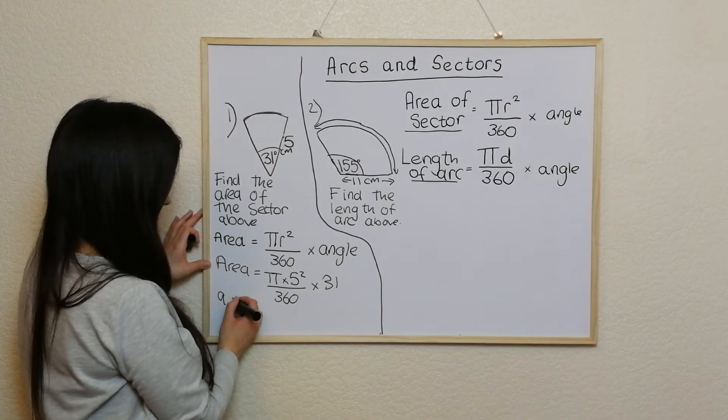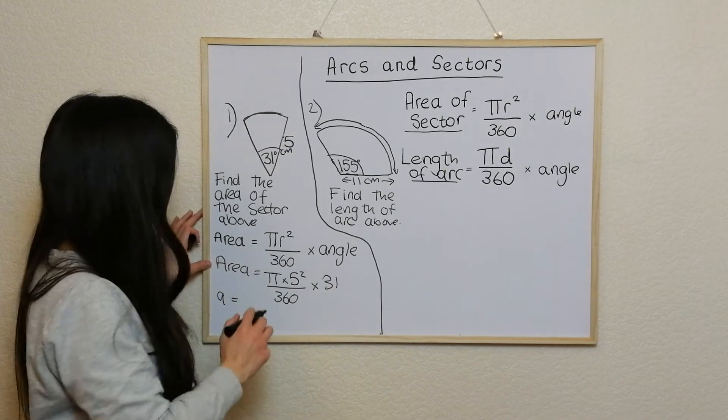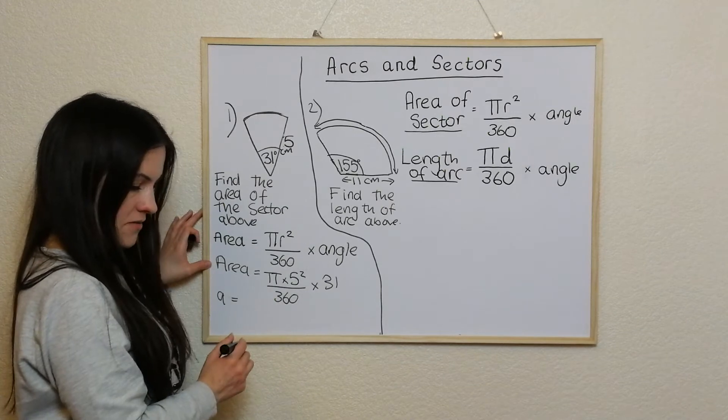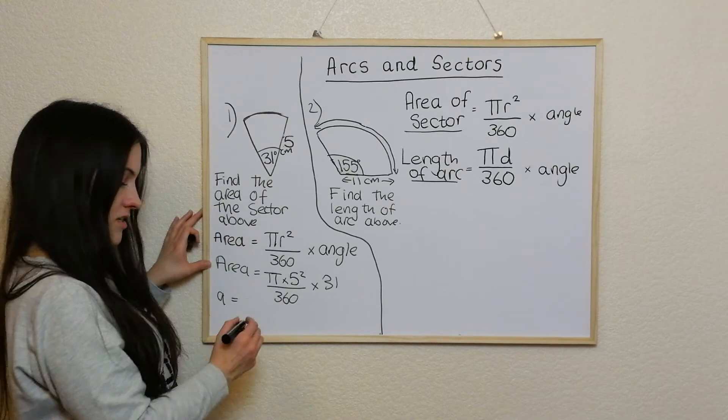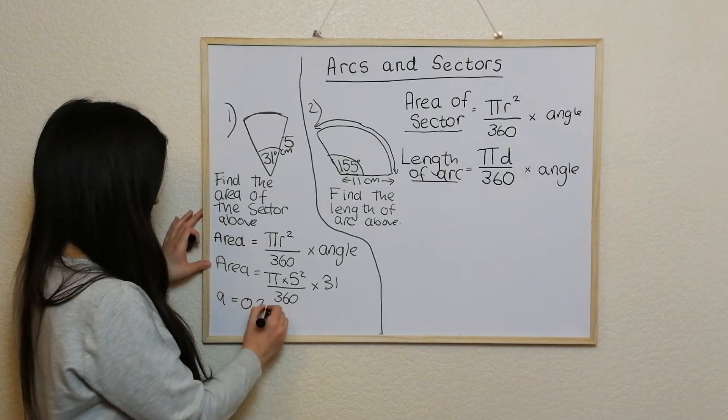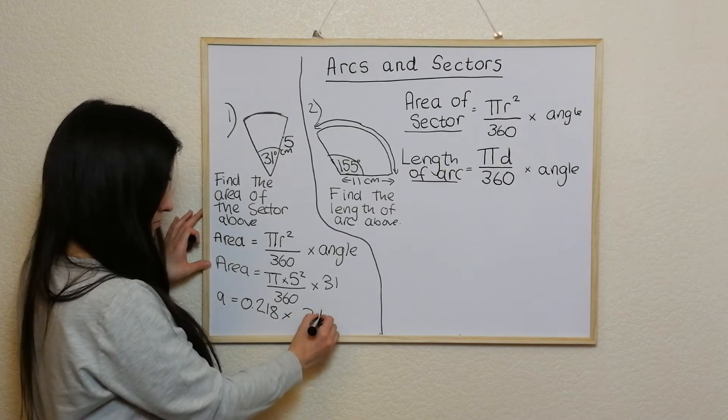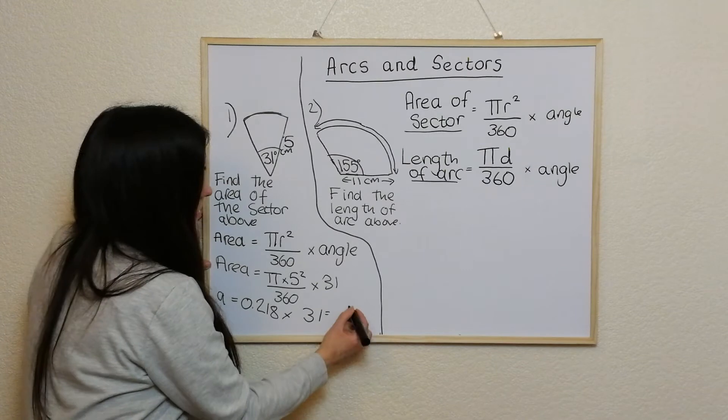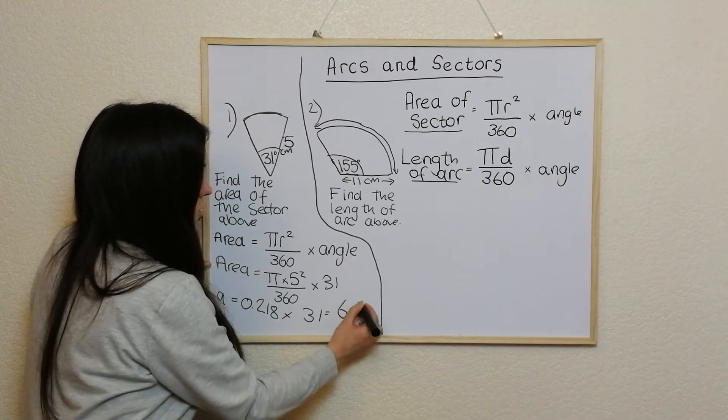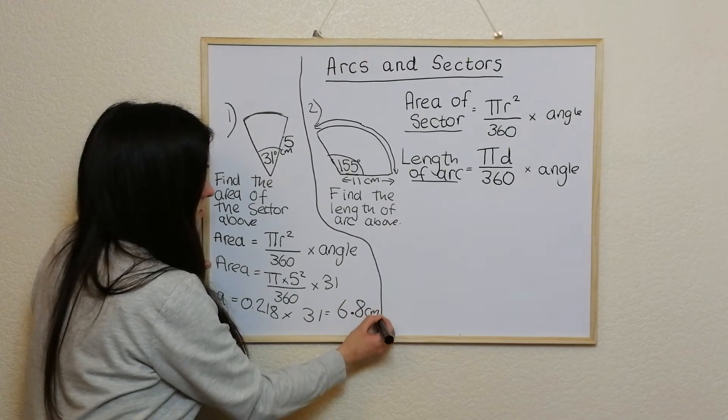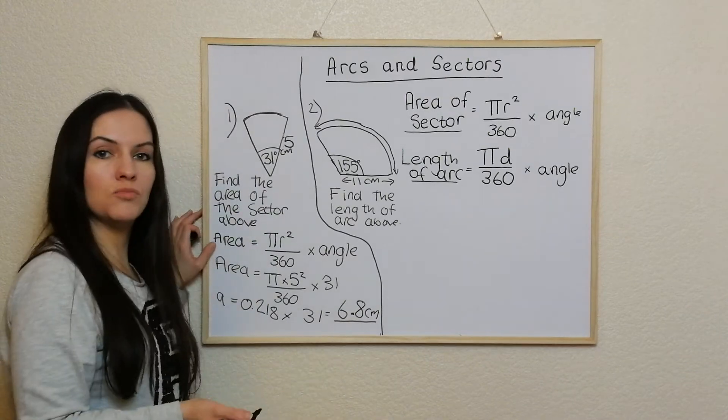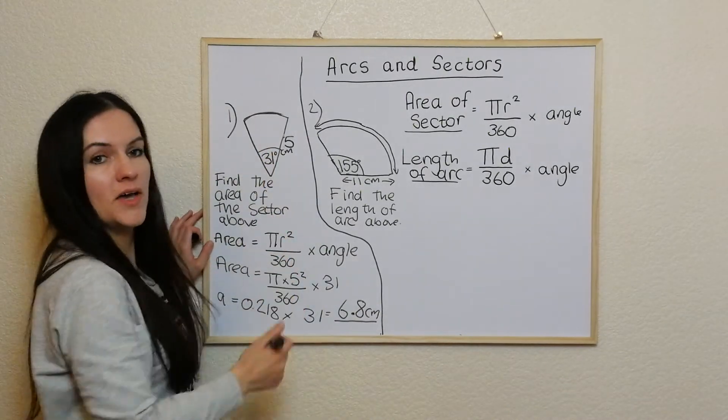So the area is, so pi times 5 squared divided by 360 is 0.218. If I times that by 31, I end up with 6.8 centimeters squared to one decimal place. So that's the area of this bit inside.